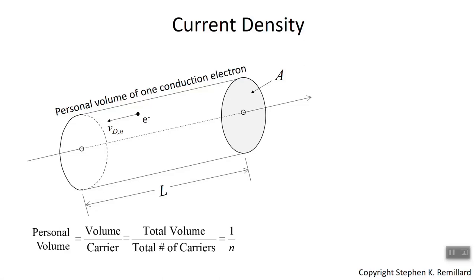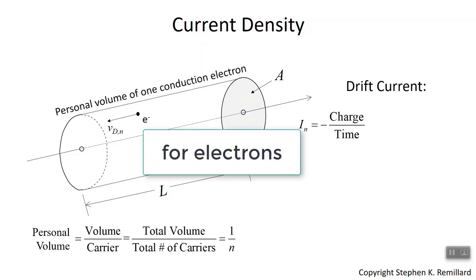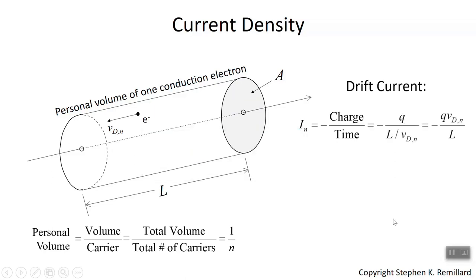This is useful for writing an expression for drift current. Drift current is the current that results from charges moving under the influence of an electric force — charge per unit time, passing any given point. The minus sign is because we're talking about electrons. For holes, we'd use subscript p and would not have a minus sign. q is the charge of an electron, 1.6 times 10 to the minus 19 coulombs, and the time an electron spends crossing its personal volume is distance over speed.